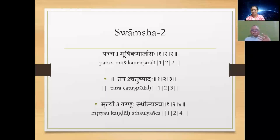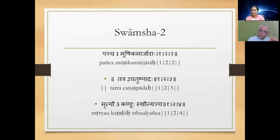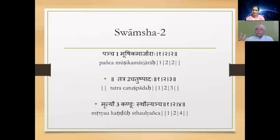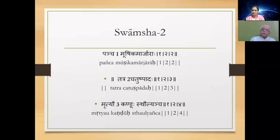The third Rashi is 'Vrityo Kandu Sthoulyancham.' Sthoulyancham means being stout or obese even, and Kandu is itching. Vrityo in Katapayadi is number three, so this is talking about Gemini. If the Chara Atma Karaka is placed in Gemini, then that person will be troubled by itching — could be Eczema also — and would be obese, or rather plus-size, bulky. Thoula also means having a substantial body mass. This is what is said by Jaimini.